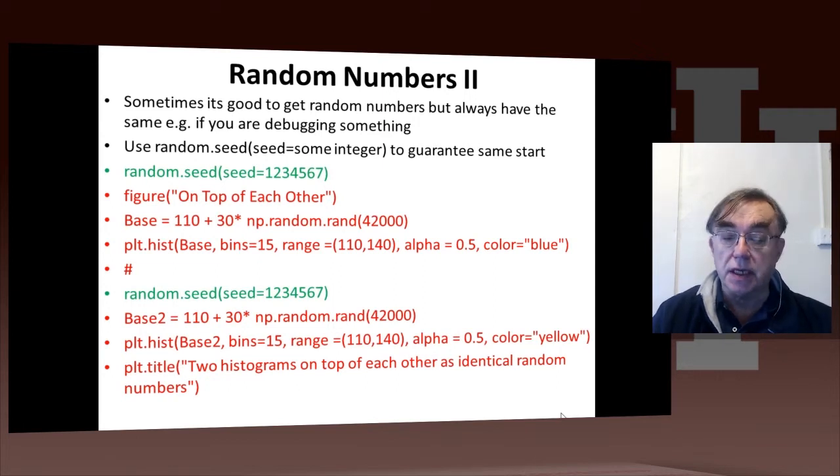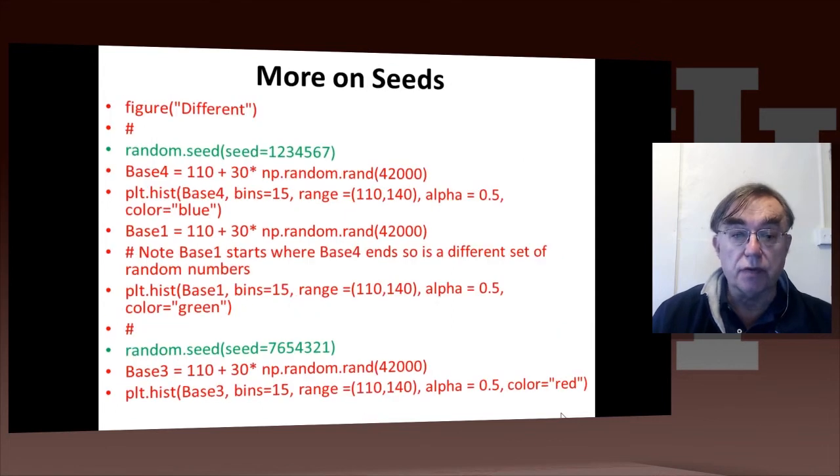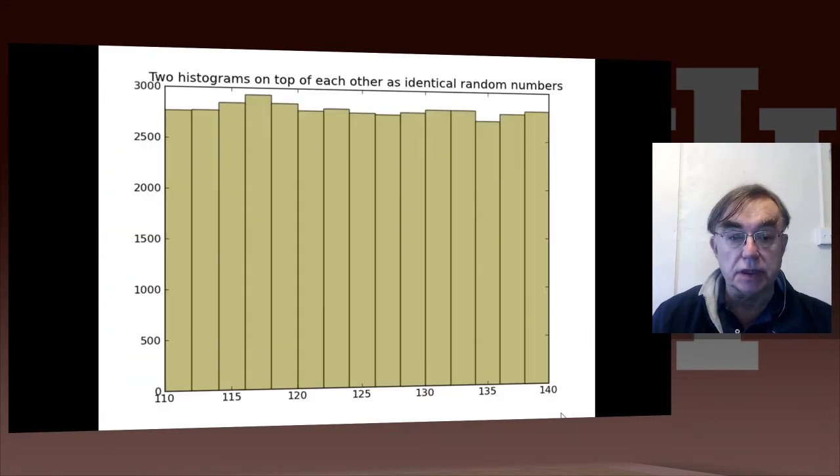Base and base2 are started with the same seed. If you start them with the same seeds, they're going to be identical. Therefore, when you look at the plot, which is here, base and base2, you will not see two histograms, you'll just see one of the merged color, which is what you get by putting two identical plots on top of each other.